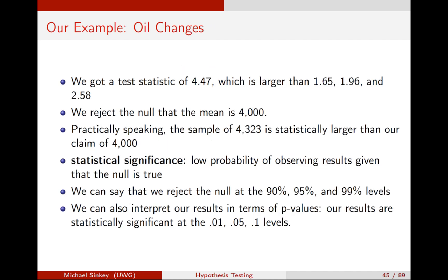We got a test statistic of 4.47. It's larger than all the critical values, so we reject the null. Practically speaking, the sample mean is statistically larger than 4,000 — this is a statistically significant difference from 4,000. There's a low probability of seeing our sample if the true mean is 4,000. I can describe the results in two ways: I say I reject the null at the 90%, 95%, and 99% levels, or I say the results indicate a statistically significant difference at 0.01, 0.05, or 0.10. Either way is fine; you have to describe your conclusion with one of these two ways.